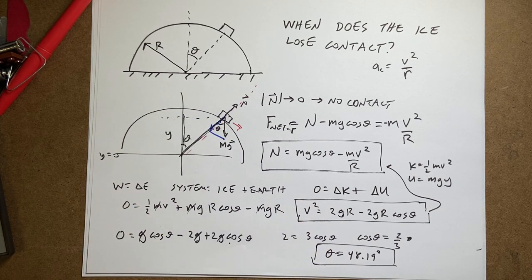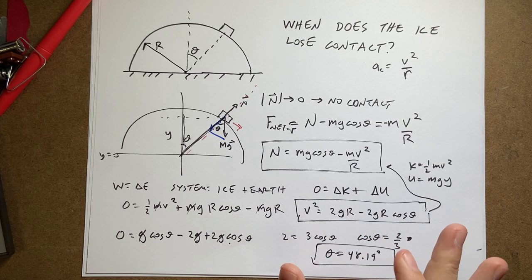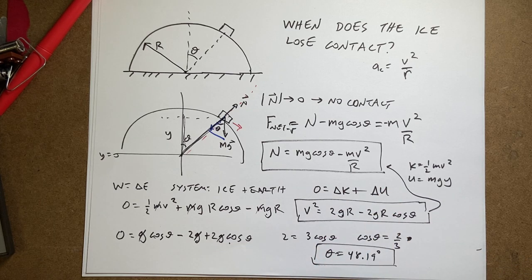But there you go. So that's your classic classical mechanic problem of a block sliding down a bowl. And where it loses contact. Now I'll tell you, spoiler alert, I am going to do this problem again a little bit later using not forces and energy but the Lagrangian. Because it's a good problem for that too.